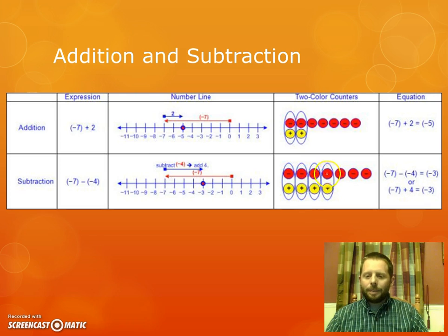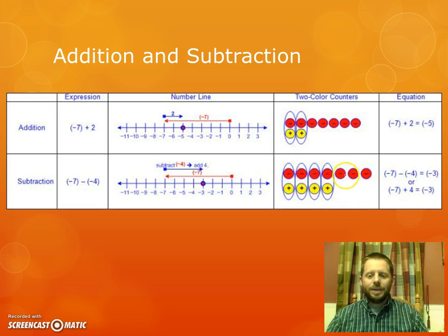Modeling with the two-color counters. Again, start out by creating your 7 negative chips. But again, because we're actually taking away a negative 4, remember negative just means opposite, right? So the opposite of negative 4 is positive 4. So when you subtract a negative 4, it's really like putting four positive chips into the problem. Again, we remove the zero pairs, see what remains. And you can see there's three negatives remaining.